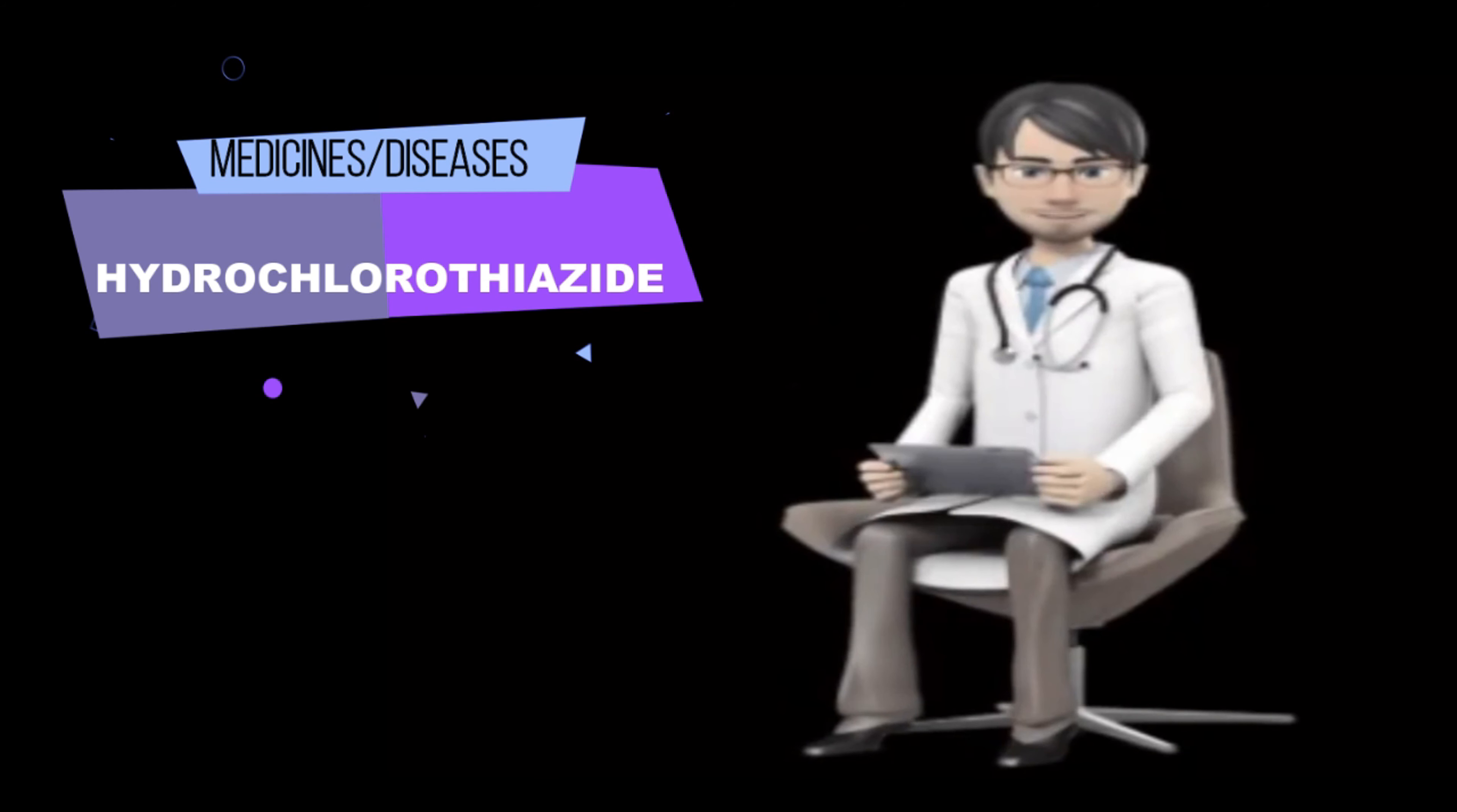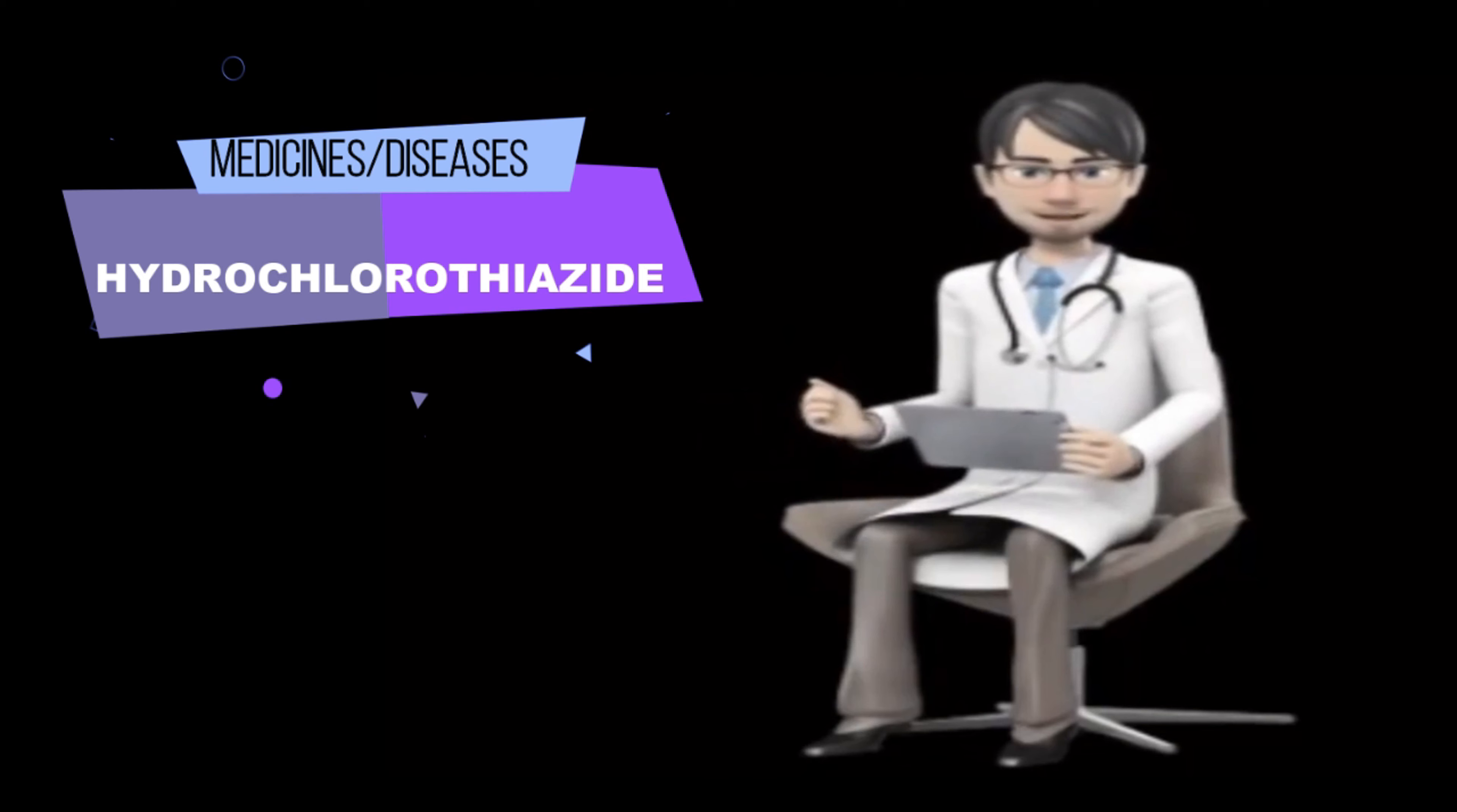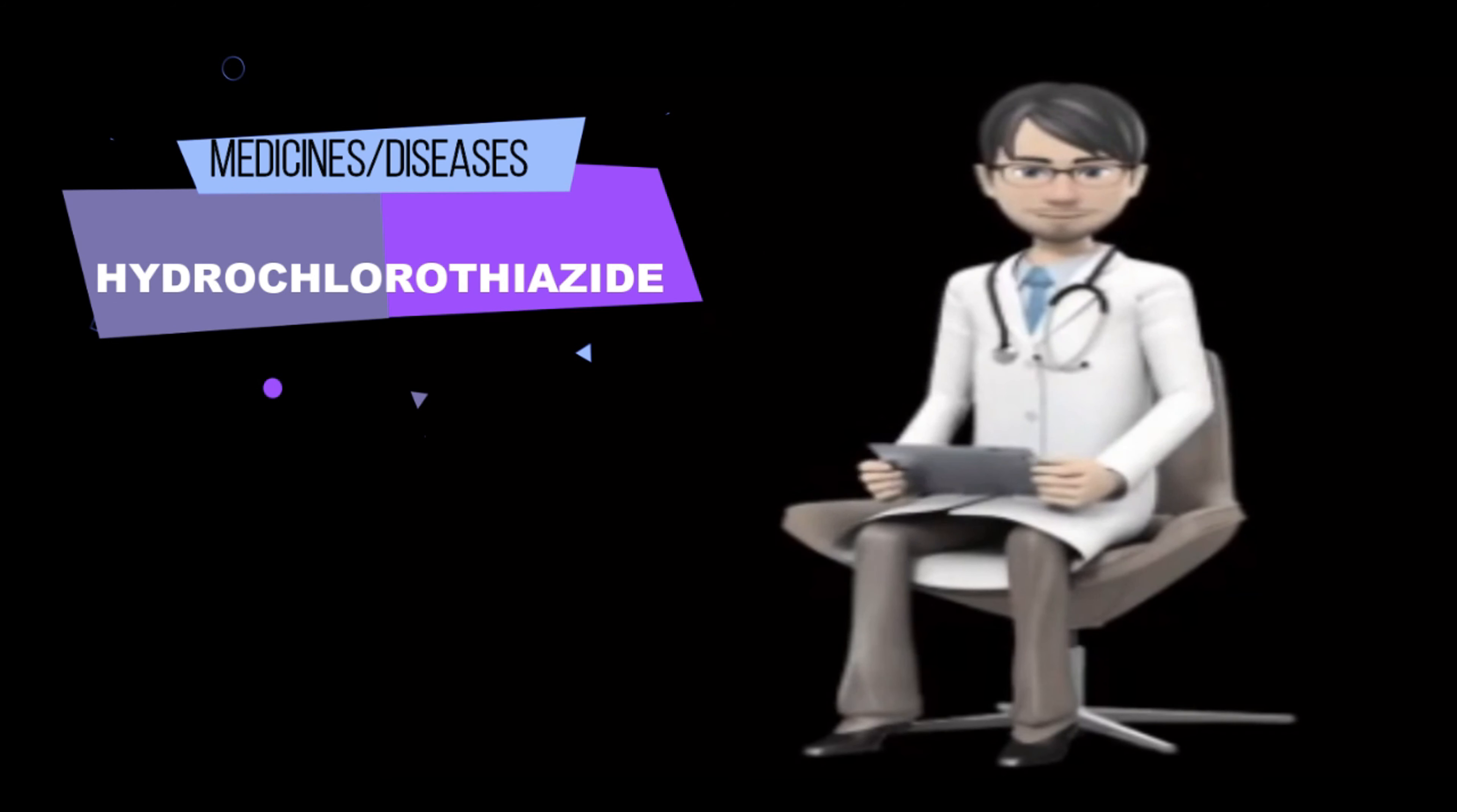Dehydration symptoms: feeling very thirsty or hot, being unable to urinate, heavy sweating, or hot and dry skin, or signs of an electrolyte imbalance: increased thirst or urination, confusion, vomiting, constipation, muscle pain, leg cramps, bone pain, lack of energy, irregular heartbeats, tingly feeling.